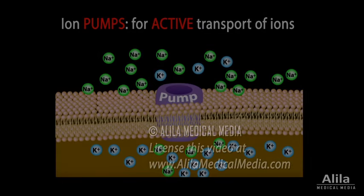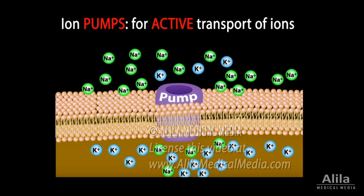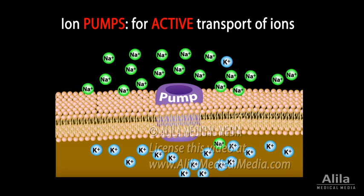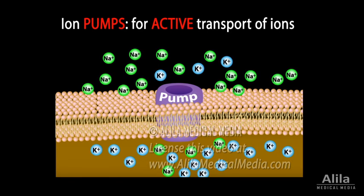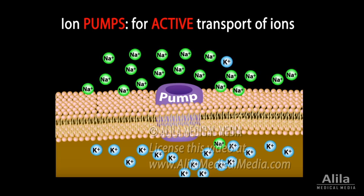Active transport of ions is carried out by ion transporters, or ion pumps. These are transmembrane proteins that pump ions against their concentration gradient using cellular energy, such as ATP. The most notable example is the sodium-potassium pump, which maintains the resting potential in neurons by pumping 2 potassium in and 3 sodium out of the cell.